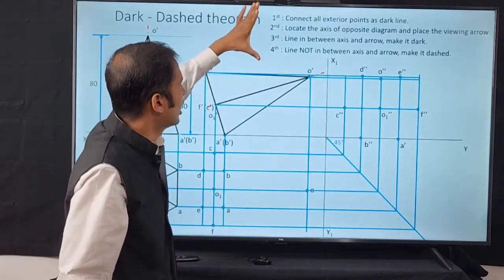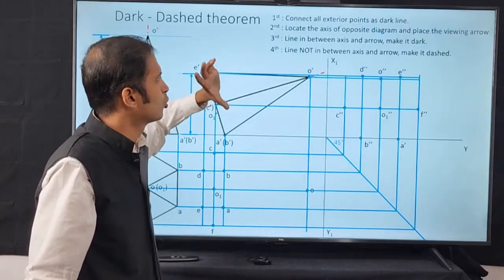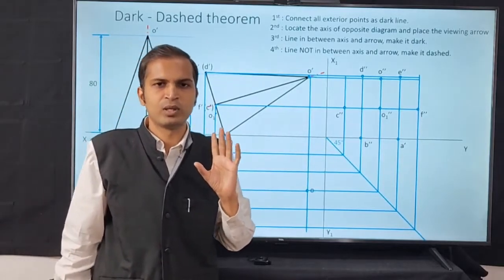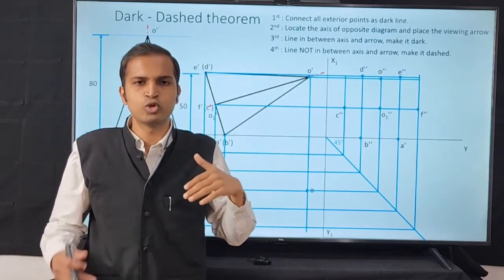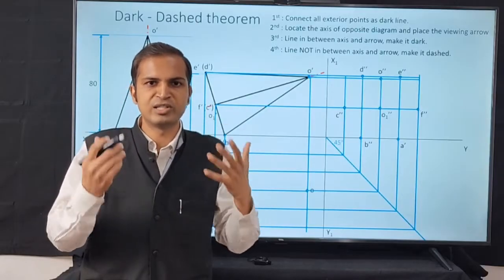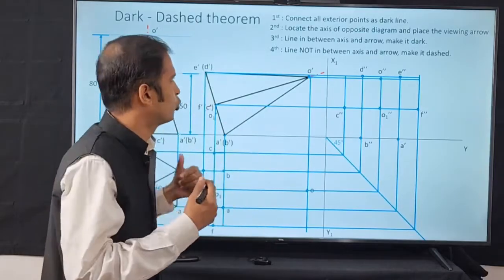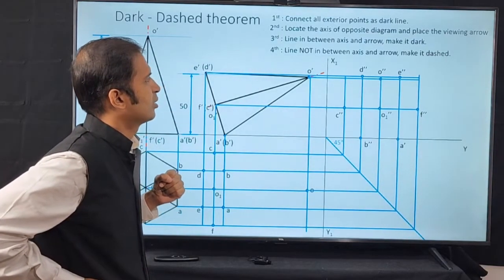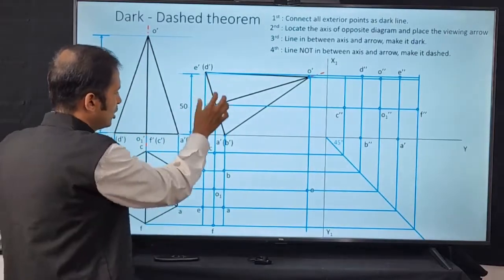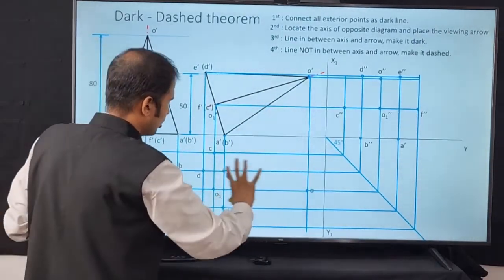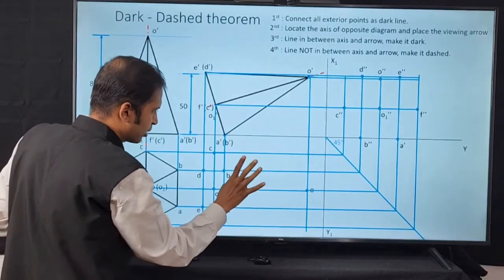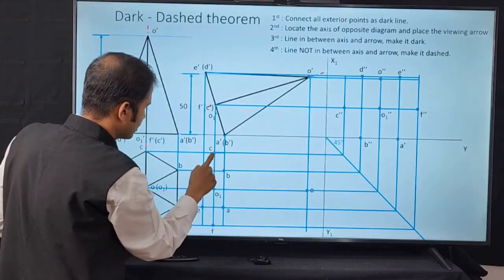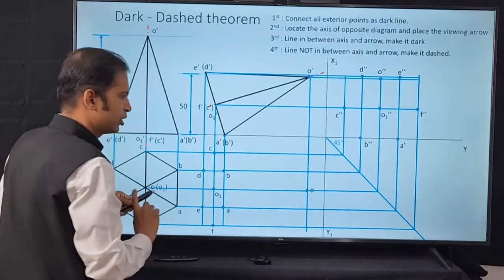The theorem has four steps. Step 1: Connect all exterior points as dark lines. I have projected all lines and marked the intersection points — O, A, B, C, D, E, F. Now, looking at the projected diagram, the exterior points form the outer loop: C, D, E, F, O — these are the exterior points. A and B are the interior points.